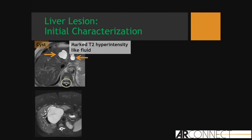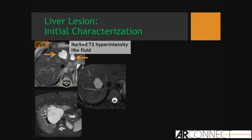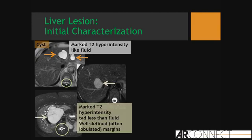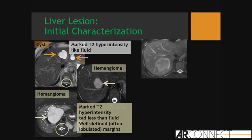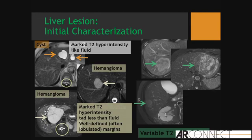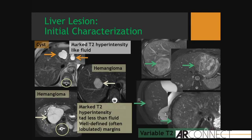However, when we get to hemangiomas, we have T2 hyperintensity — it's not the same as fluid, it's well-defined. I still feel comfortable, but then we get into heterogeneous T2 hypointensity with other liver lesions, and when you get into the variable T2 intensity, I start to not be able to tell you what this lesion is.